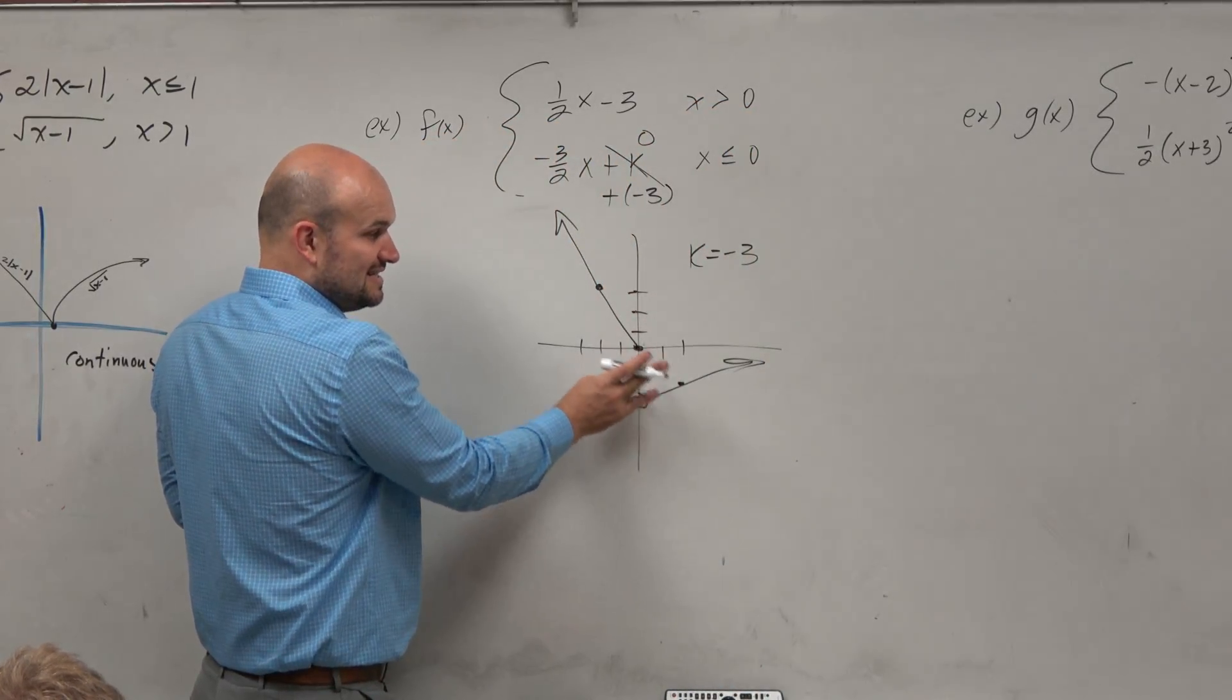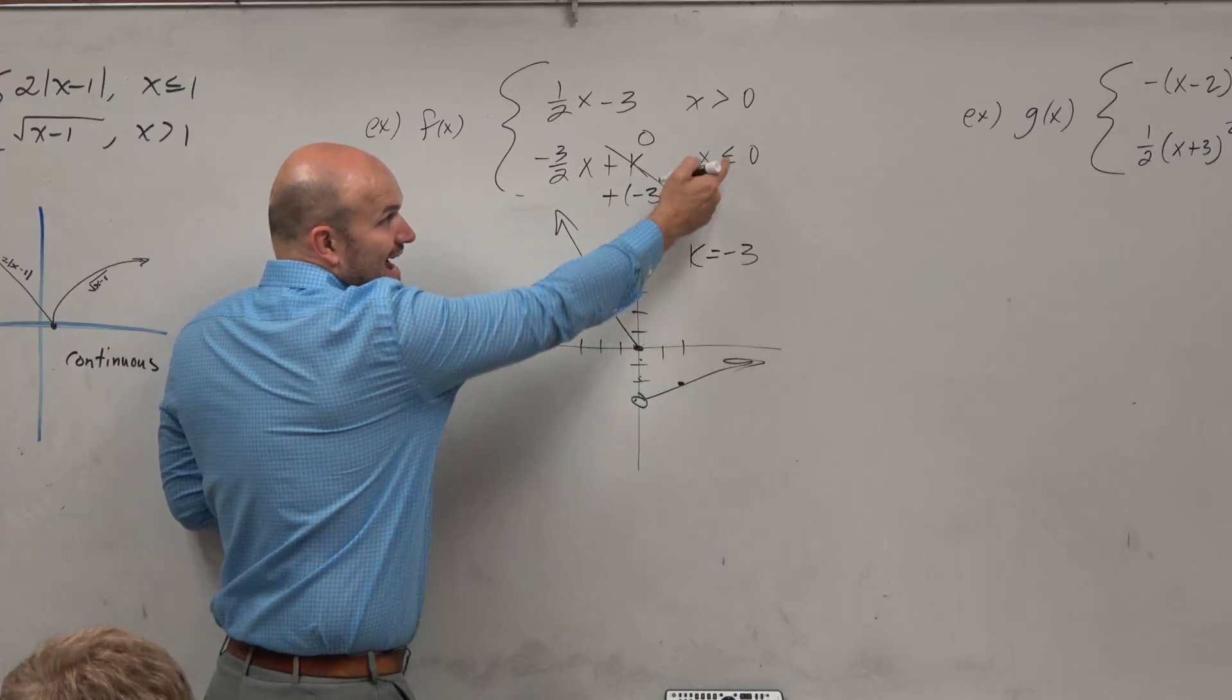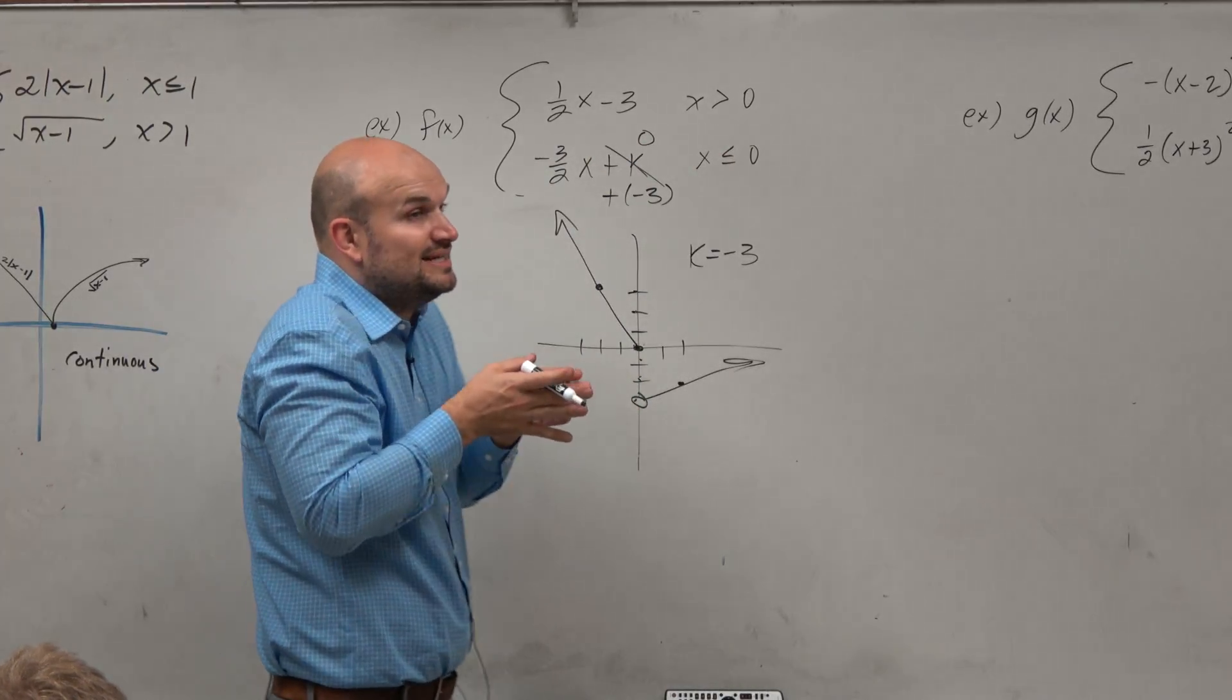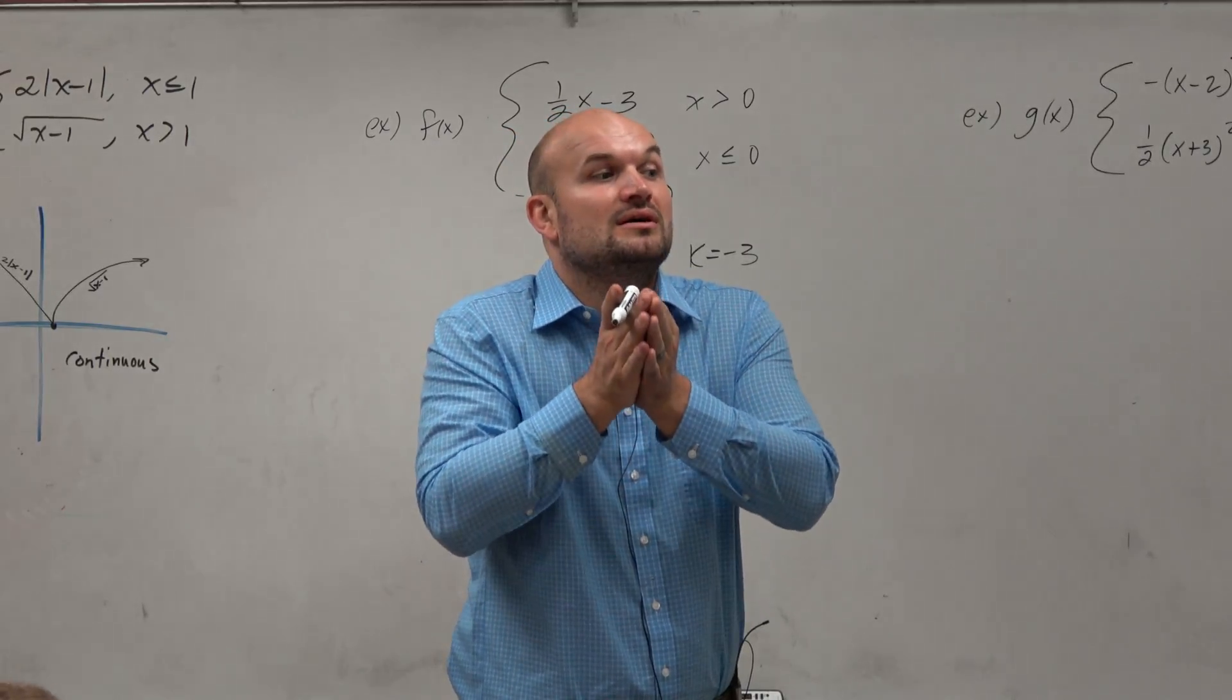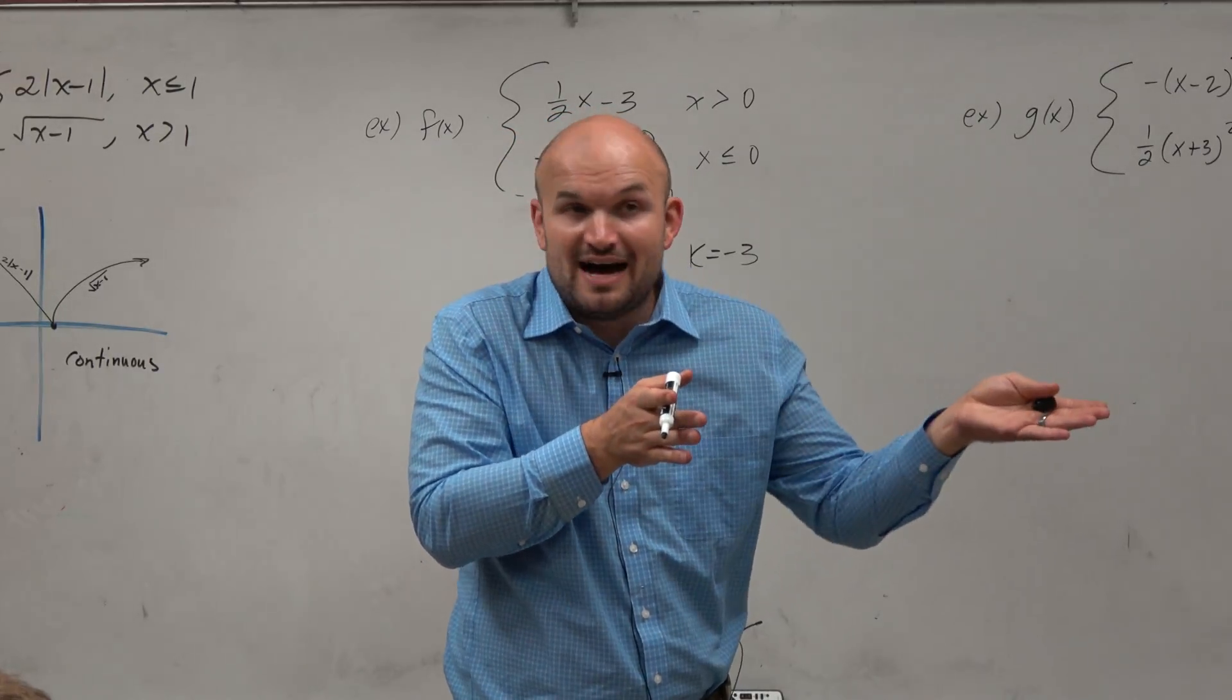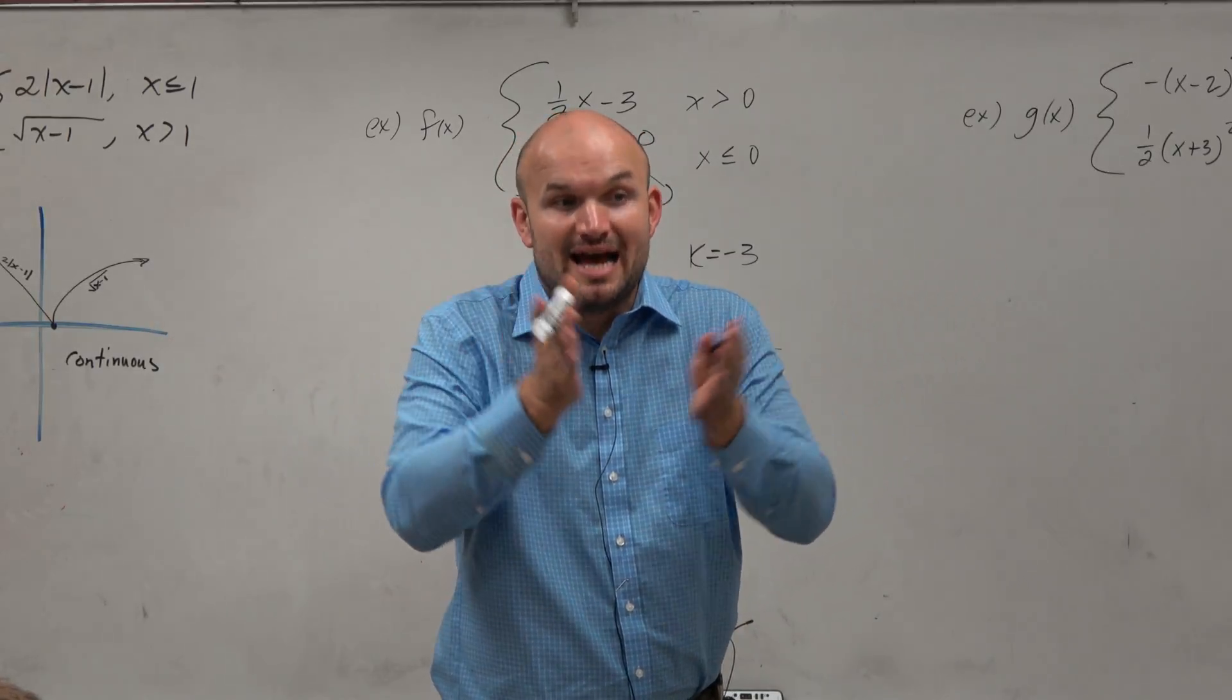These are discontinuous right now when x is equal to 0, right? So if we want them to be continuous, we want them to be continuous when x is equal to 0. Not 5, not negative 7, x is equal to 0.